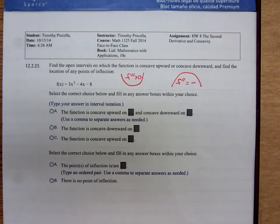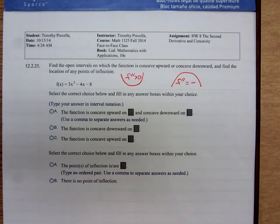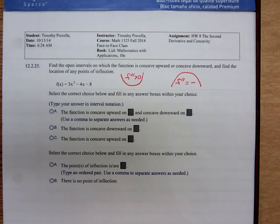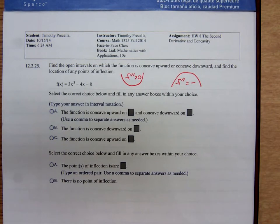And before the second derivative can change from positive to negative, it either has to equal 0 or be undefined. Basically, we're applying the first derivative test to f prime, determining when is f prime positive, when is f prime increasing, and when is f prime decreasing.